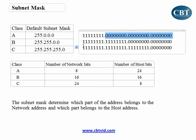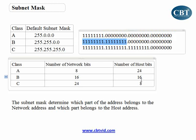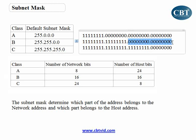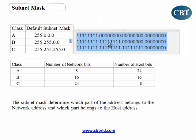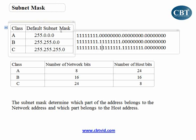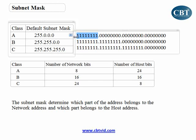Class B: the number of network bits is 16 — here I've got 16 ones. Number of host bits is 16 — I've got 16 zeros. Number of network bits in Class C is 24, number of host bits is 8. So in the default subnet mask, the number of ones means the number of network bits, and the number of zeros represents the number of host bits.